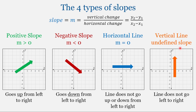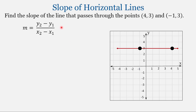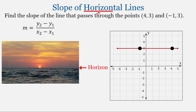Let's look more closely at horizontal and vertical lines. We're going to find the slope of the line that passes through the points (4, 3) and (-1, 3). Just a vocabulary reminder — when you see the word 'horizontal,' you see the word 'horizon' within it. The horizon is this flat line going from left to right. This may help you remember the difference between a horizontal line and a vertical line.